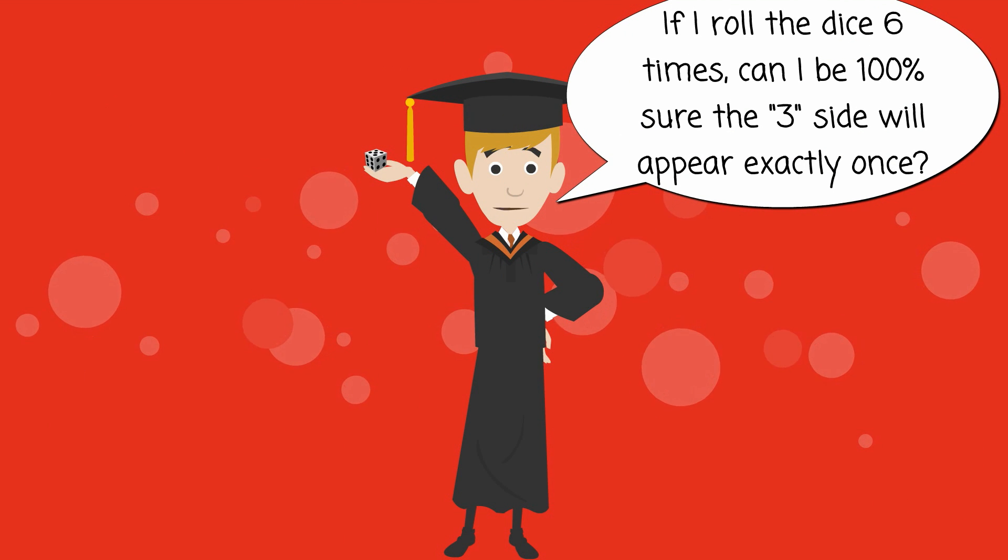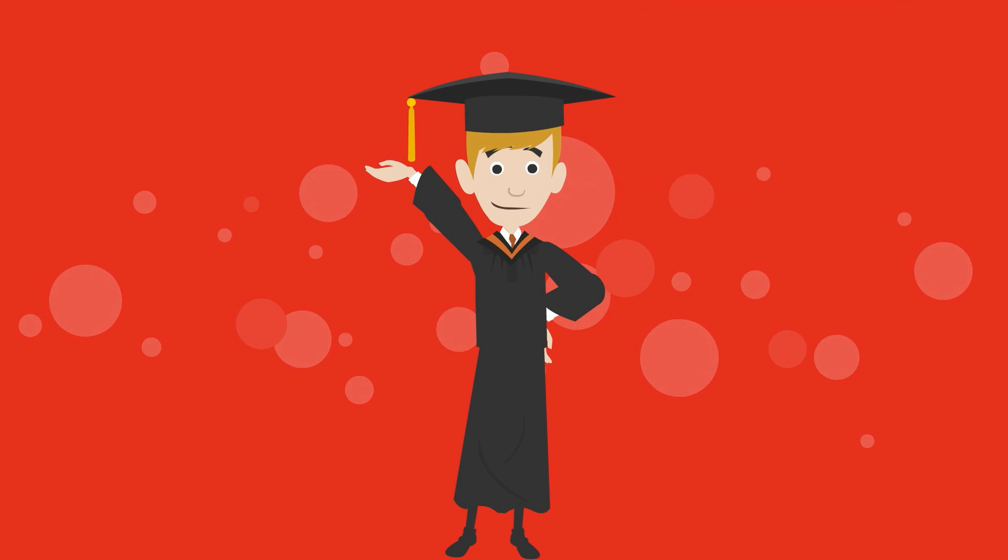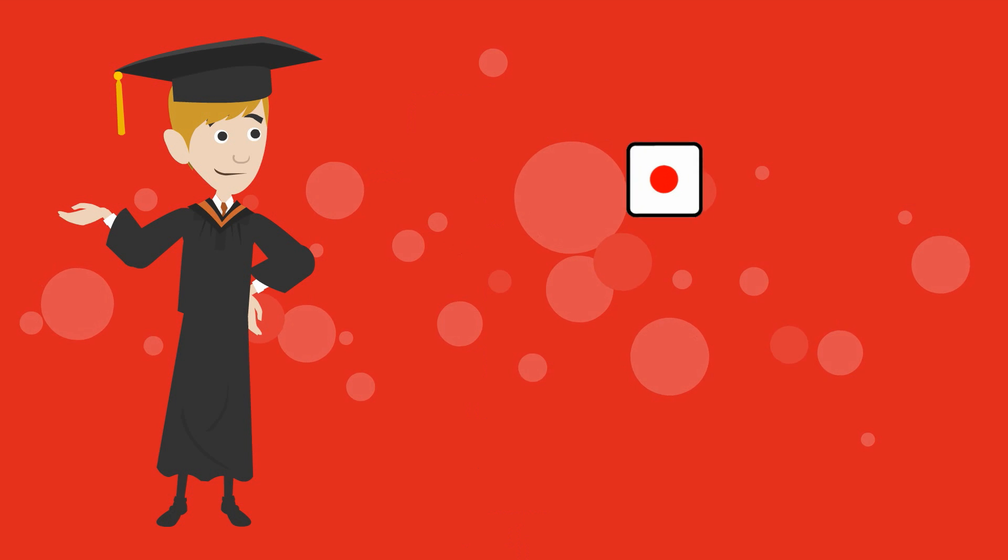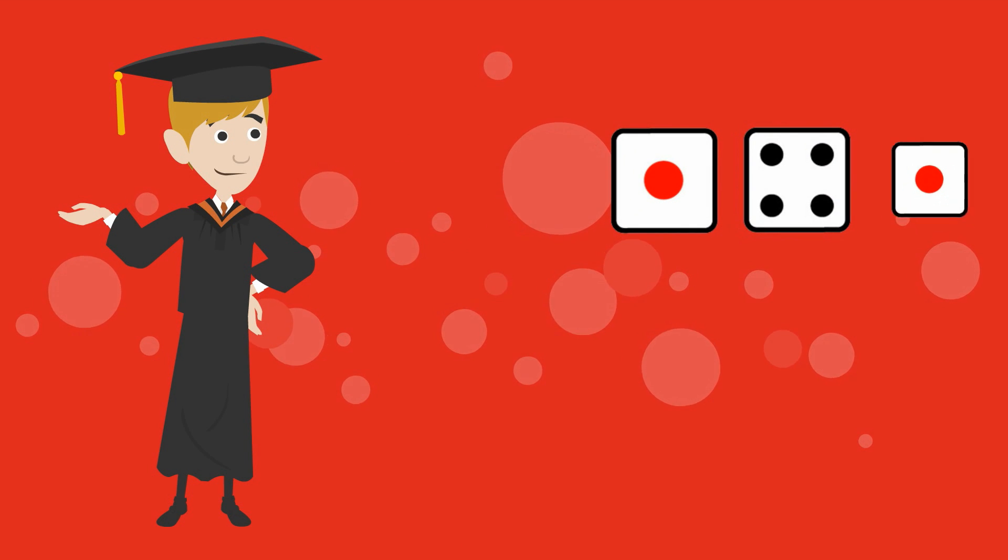In other words, yes, there's a one in six likelihood of rolling the dice and obtaining, let's say, three. But this doesn't mean that if we roll a dice six times ourselves, we'll obtain three exactly once.